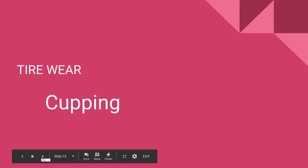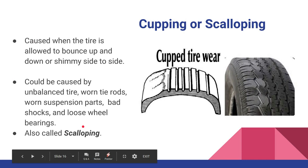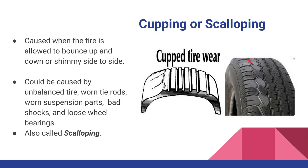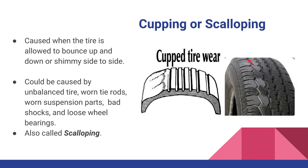Next is tire cupping, which has many causes and takes different wear patterns and shapes. In typical cupped wear, you see a worn spot, then an unworn spot, then worn, then unworn, alternating around the tire. If you run your hand across it you can feel dips. It's also called scalloping — those terms are interchangeable. What causes this is the tire either bouncing up and down or shimmying side to side, wearing spots on the tire.